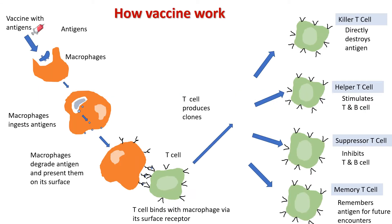When an individual gets a vaccine, macrophages come to the place of injection. Macrophages are a type of white blood cell of the body's immune system that fight foreign substances and microbes. Macrophages come and take up the antigen present in the vaccine, recognize it as a foreign particle, and after ingestion of the antigen, macrophages degrade them and present some antigen particles on their surface.